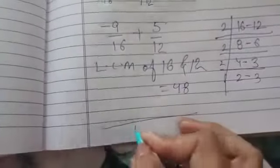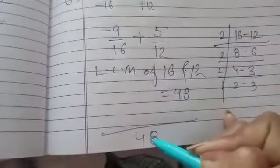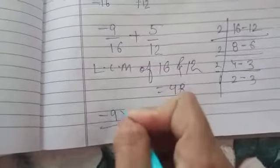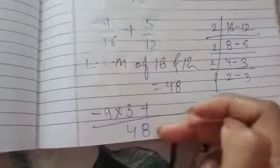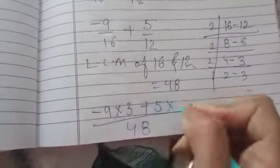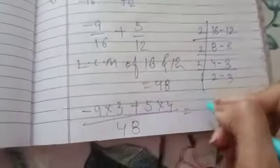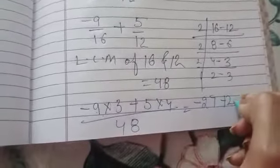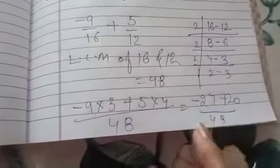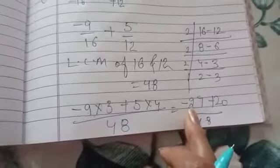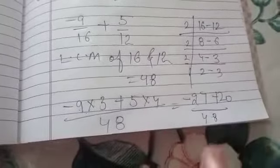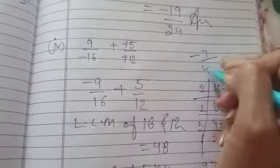Start solving it. 16 will divide the 48. 16 times 3 is 48. You will get 3. 3 will multiply with 9. 12 times 4 is 48. 4 will multiply with 5. 9 times 3 is 27. Minus 27 plus 5 times 4 is 20 over 48. Which is the bigger number? Minus 27. Both the numbers are from different signs. 27 minus 20 will be 7. You will get minus 7 over 48 as your answer.